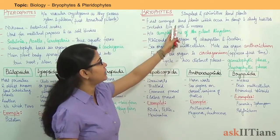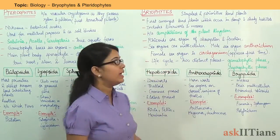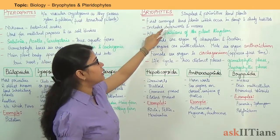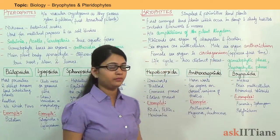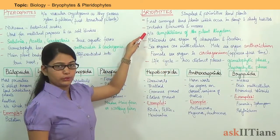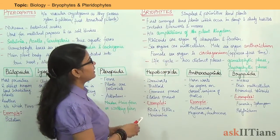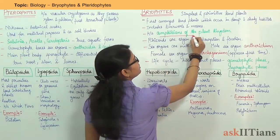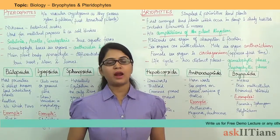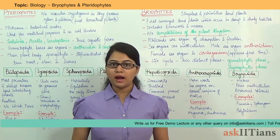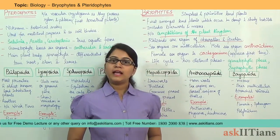Bryophytes are the simplest and most primitive land plants. They are the first amongst land plants which occur in damp and shady habitats. Bryophytes include liverworts and mosses. Bryophytes are also known as the amphibians of the plant kingdom, because they live in soil but they have to depend on water for their sexual reproduction.